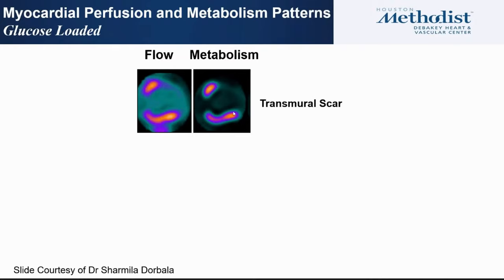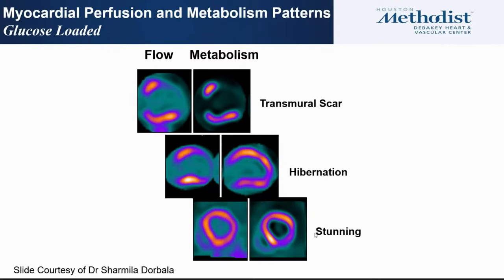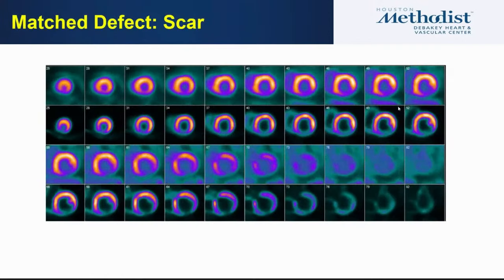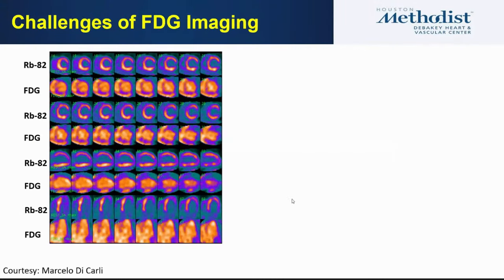PET imaging patterns: a matched perfusion-metabolism defect indicates transmural scar; a perfusion defect with FDG uptake indicates hibernating viable myocardium — mismatch; and reverse mismatch is hypothesized to represent stunning. Here is a case with a match defect showing no FDG uptake, and another with a large anterior perfusion defect but significant FDG uptake throughout the LAD territory — extensive hibernation where revascularization would be beneficial.